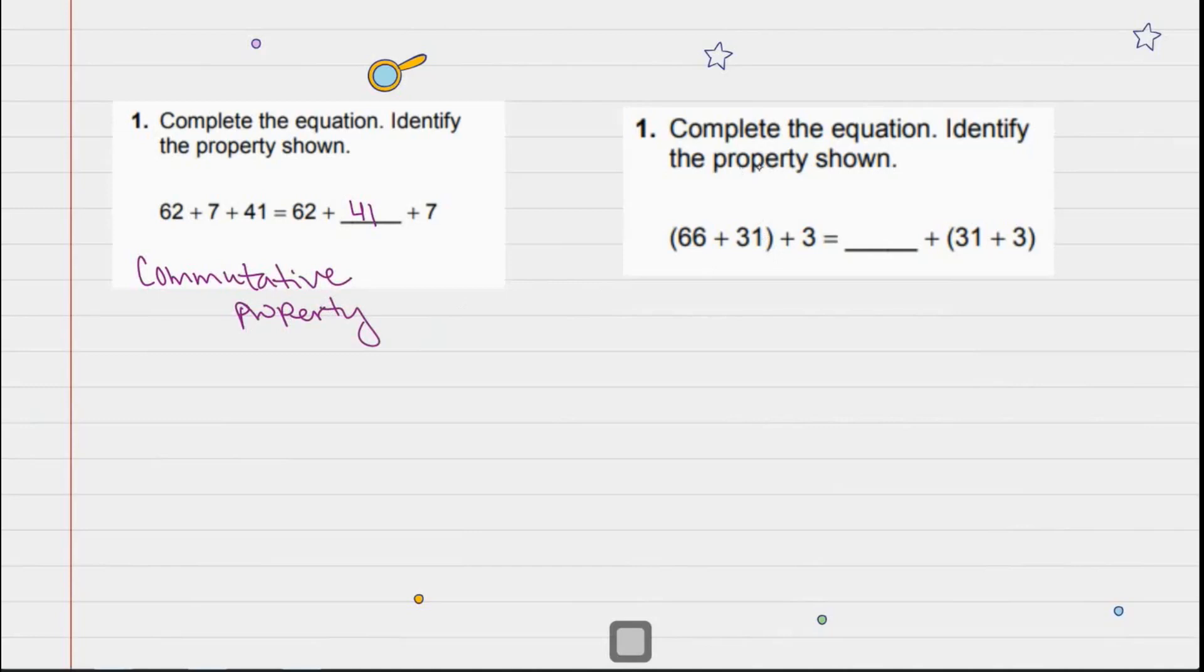The next one says complete the equation and identify the property shown. So now I see different groupings. I see (66 + 31) + 3. On the other side, I see 31 + 3 and I'm missing something here. I have 31, 3, and 3. I must be missing the 66.